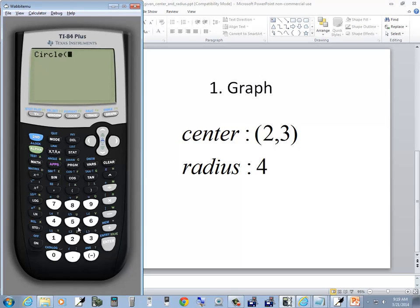And then we're going to put in our center first. So I do 2, 3, and then comma, our radius, which is 4. Closing parentheses, and then enter.